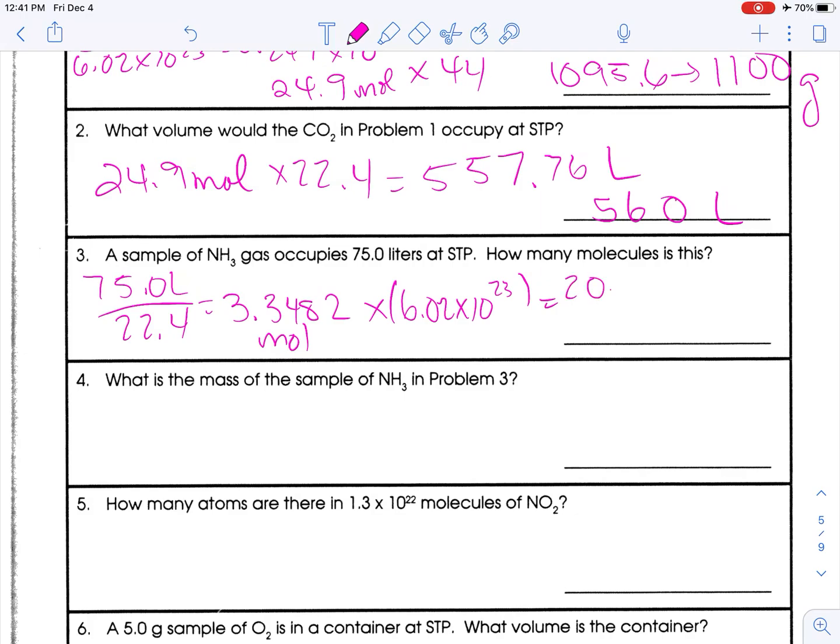I get 20.15 whatever times 10 to the 23rd, which is not proper scientific notation. So we're going to move this to the left, so we divide by 10. So 2.0156. That got smaller, so this needs to get bigger. And of course, our sig figs are not right, so we need three sig figs. So I will change that to 2.02 times 10 to the 24th molecules.